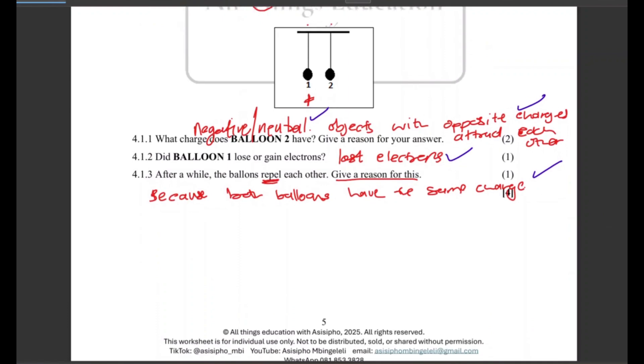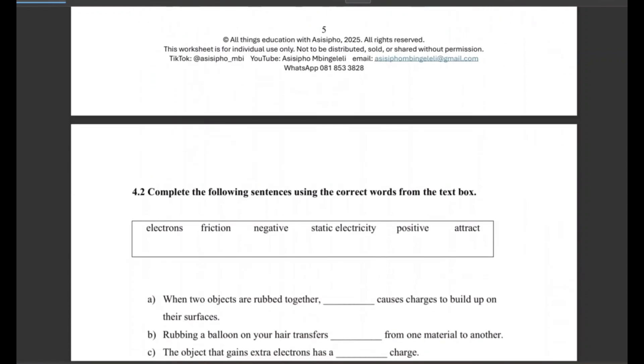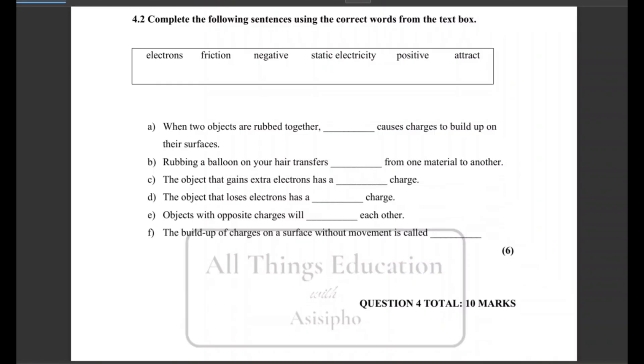Okay, so that will be one mark. Remember guys, if you have not bought the worksheet, click the link in my bio or the description box to buy. There's also a WhatsApp number that you can use to send me a message and buy the worksheet. There's grade eight and also grade nine worksheet. Let's look at the second question. So easy piece of stuff, complete the following sentences using the correct words that you're given from the text box.